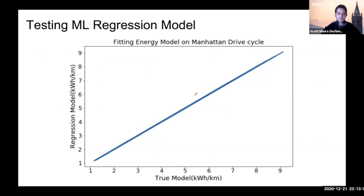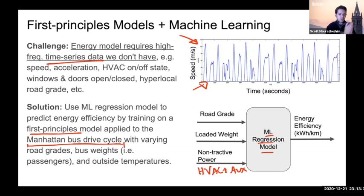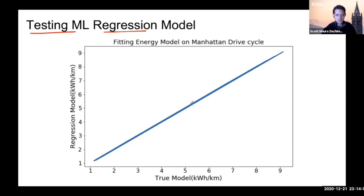Apadhi created a Monte Carlo simulation of a bus driving on the Manhattan drive cycle with many different loaded weights, road grades, and amounts of non-tractive power, then did a training and testing split. The model trained on the training data shows very high fidelity on the testing data. Keep in mind this uses a Manhattan drive cycle, not the real-world driving cycle in cities across the world — for that we would need more than open data, but this is still a meaningful and consistent benchmark across cities.